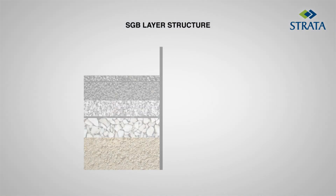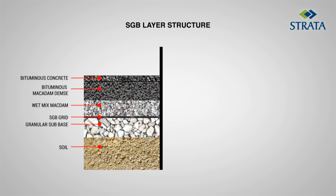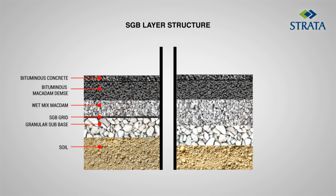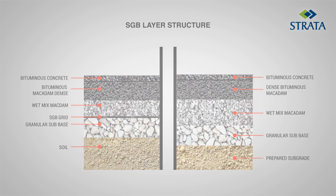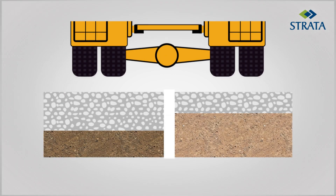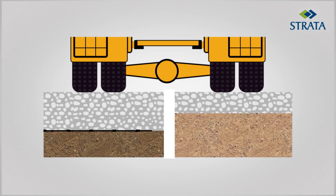The thickness of the pavement is designed based on the subgrade CBR, the traffic volume in MSA, and the modulus value of each individual layer. Using Stratagrid, the modulus value of the granular layer increases, resulting in a lower thickness in the layer. SGB geogrids can be used to reinforce pavements built on low CBR subgrades.